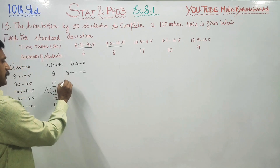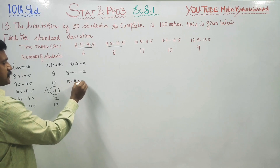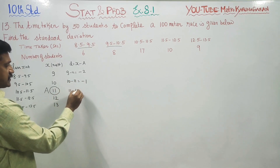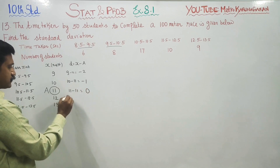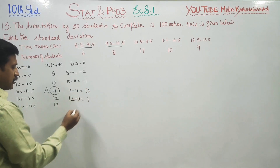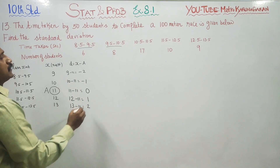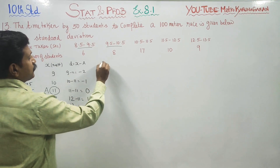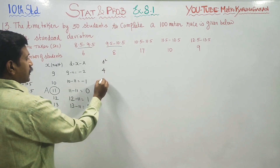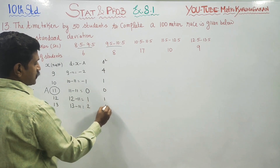Then, 10 minus 11 is minus 1. 11 minus 11 is 0. This is my assumed mean. 12 minus 11 is 1. Then 13 minus 11 is 2. And 9 minus 11 is minus 2. Then you have to find d squared: d² is 4, 1, 0, 1, 4.